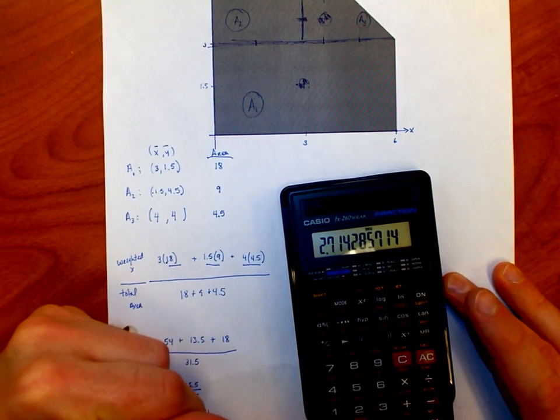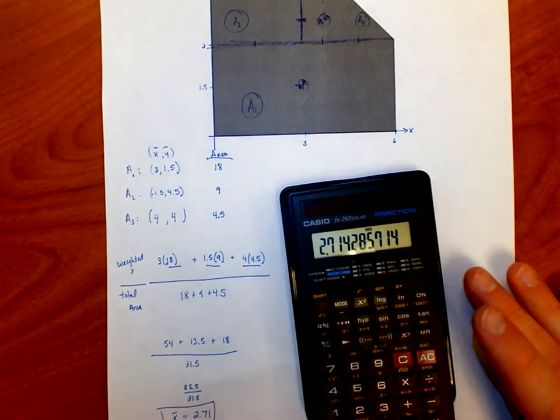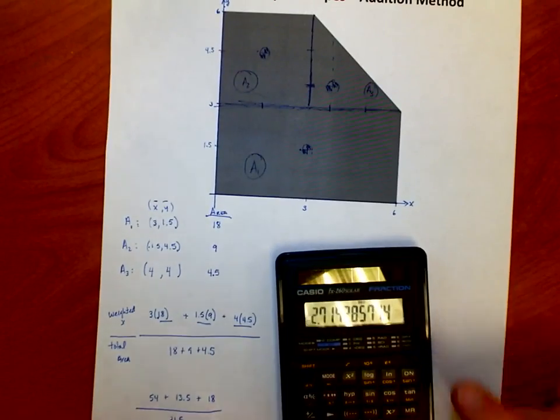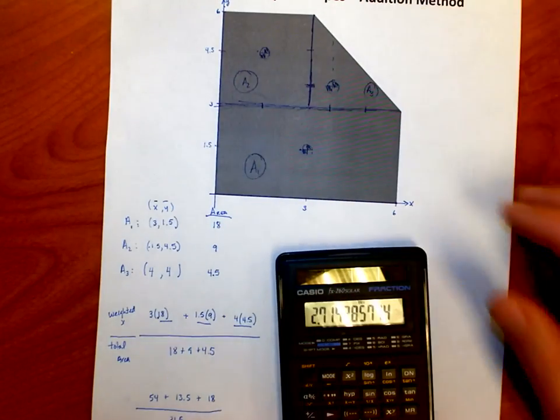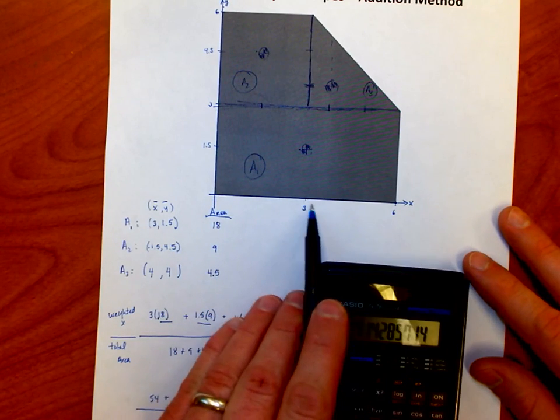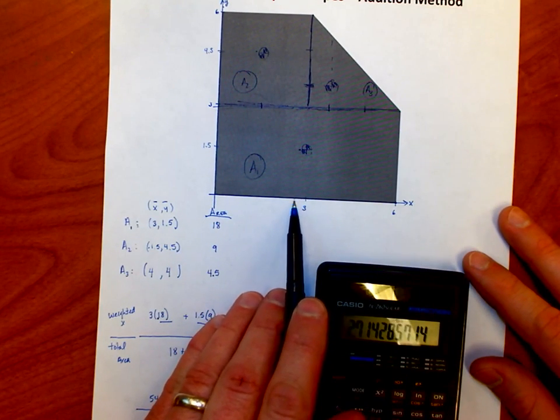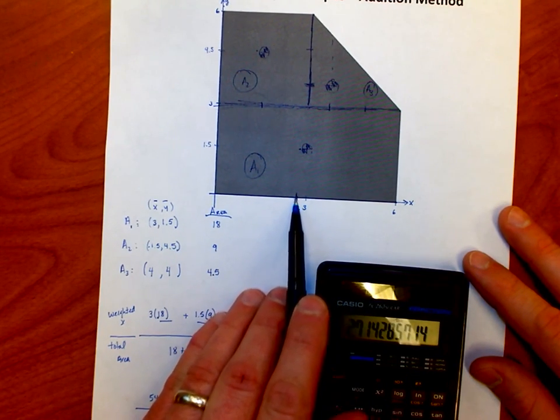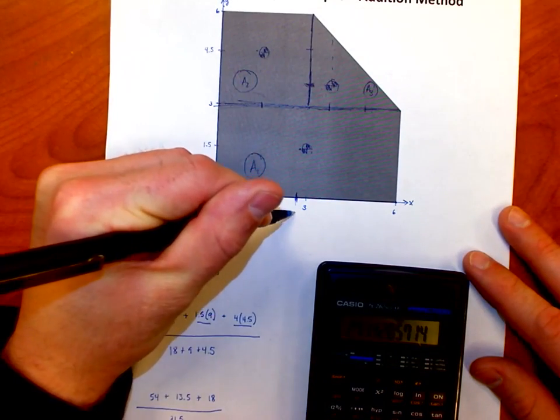So now when I talk about the centroid for the shape as a whole, the complex shape, not each individual piece, but if I put all three parts together, the X coordinate is going to be 2.71, which is just slightly left of center. It's going to be somewhere like right around here. There's about 2.71-ish.